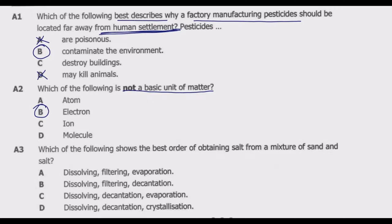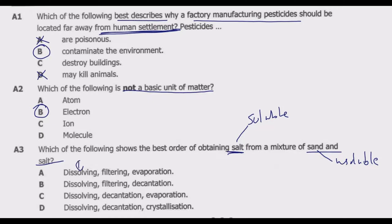Question A3: Which of the following shows the best order of obtaining salt from a mixture of sand and salt? Salt is a soluble substance and sand is insoluble, so we have two substances with different solubility. The first step is to dissolve them in water to make a solution — so dissolving is the correct first step. The next step is separating the insoluble sand from the liquid, and afterward you evaporate the liquid to get the solid salt.